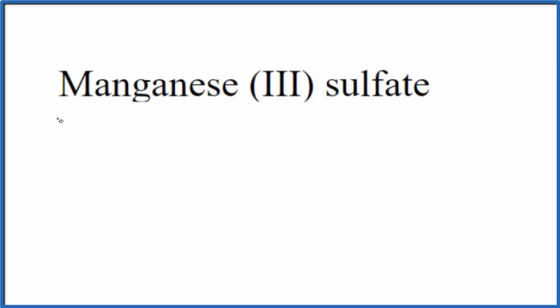In this video we'll write the formula for manganese (III) sulfate. So first let's write the element symbol for manganese, that's just Mn. And then the sulfate here, this -ate ending tells you you have a polyatomic ion you won't find on the periodic table.